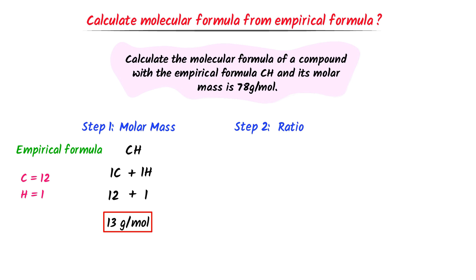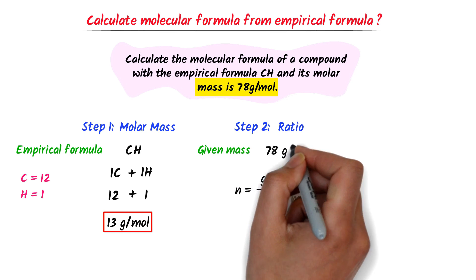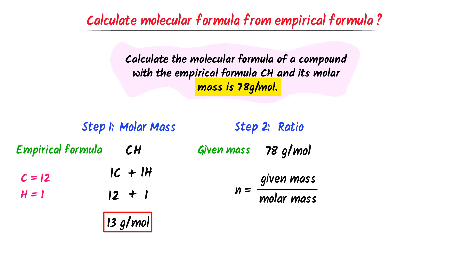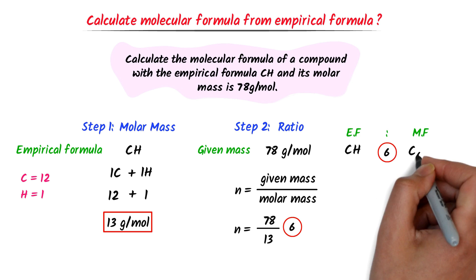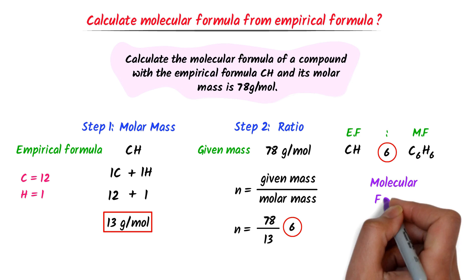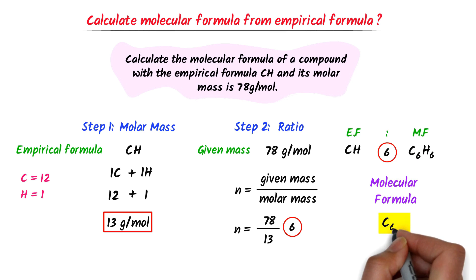Secondly, I find the ratio. To do so, I write N equals given mass divided by molar mass of empirical formula. The given mass is 78 gram per mole and the molar mass of empirical formula is 13 gram per mole. So I divide 78 by 13 and get N equals 6. Hence the ratio between empirical formula and molecular formula is 6. I write empirical formula CH and multiply its whole numbers by 6. I get C6H6. Thus the molecular formula of CH is C6H6.